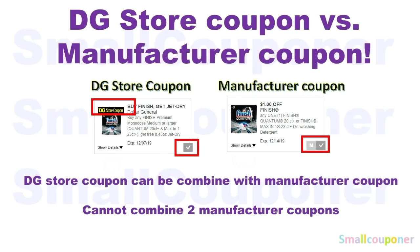This is the difference between a DG store coupon and a manufacturer coupon. A DG store coupon will have a banner on the top, and on the desktop, when you clip it, it's just a checkmark. For a manufacturer coupon, there is no banner on the top, and when you clip it, there will be an M and a checkmark next to it. On the app, when you clip it, it's just a checkmark for everything, so you look for the banner to distinguish them. If there is a banner, it's a store coupon; if there is no banner, it's a manufacturer coupon.